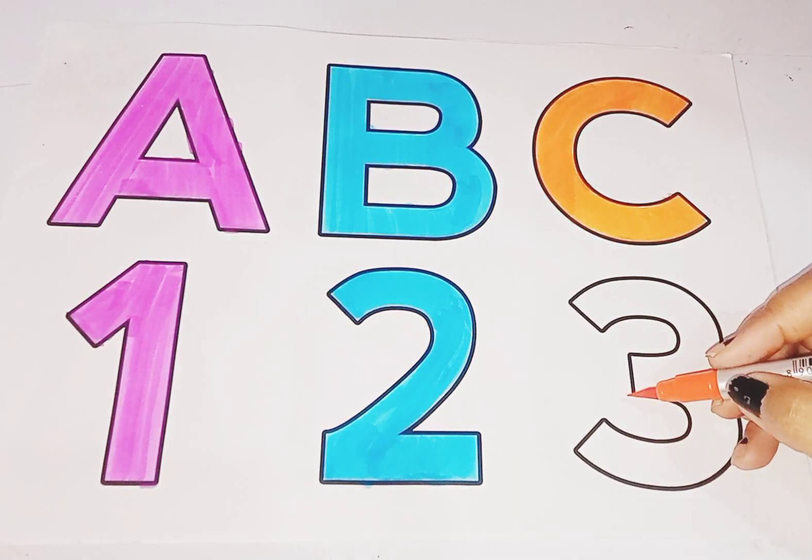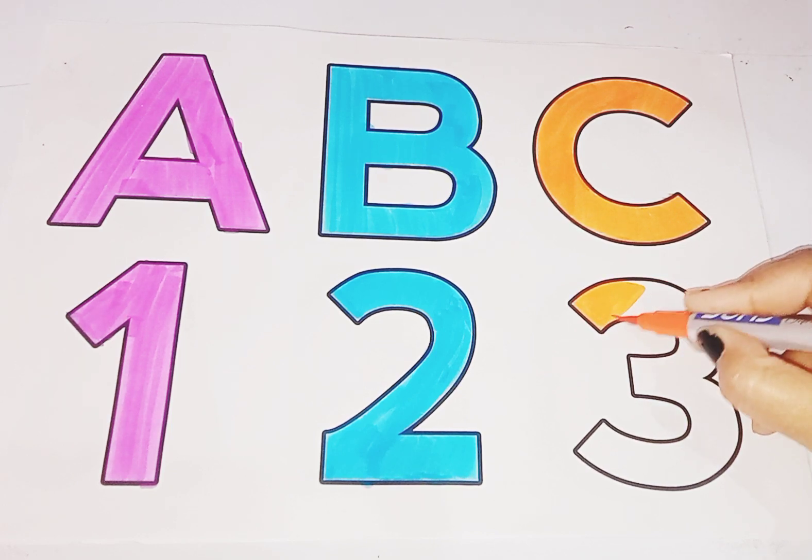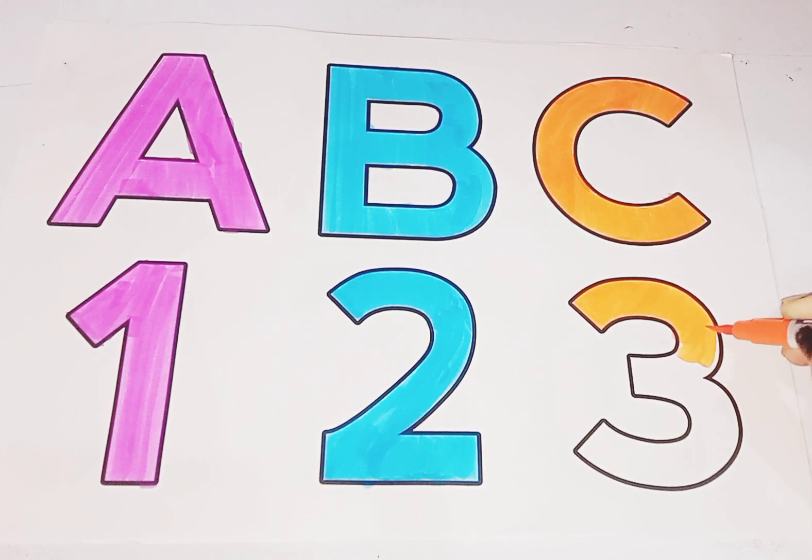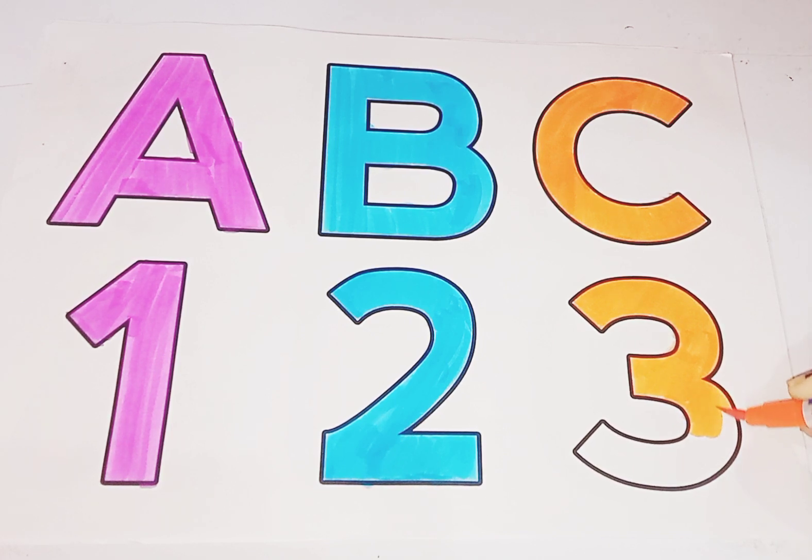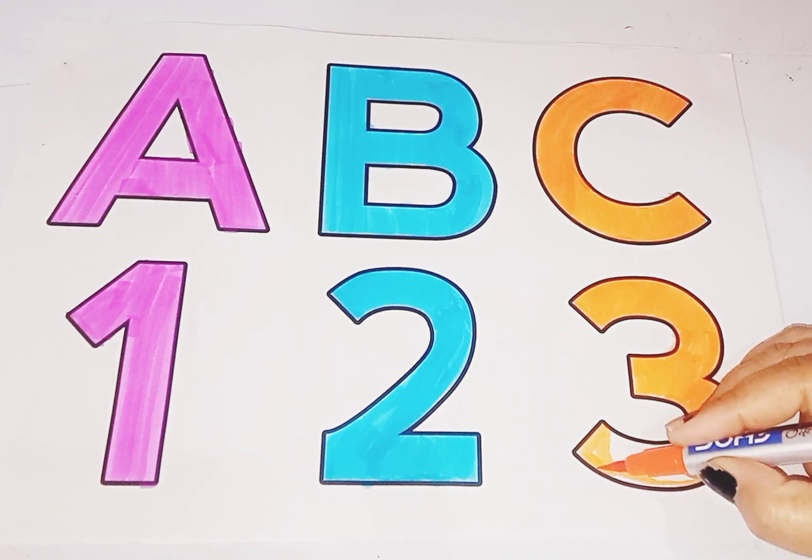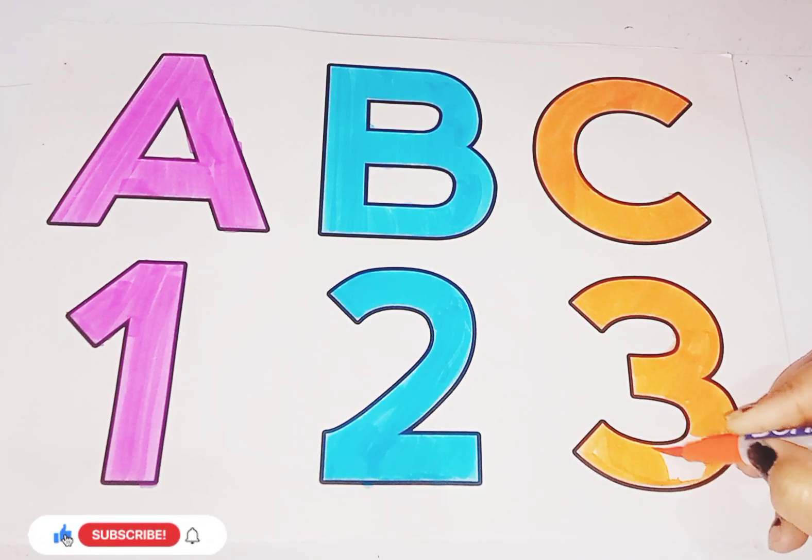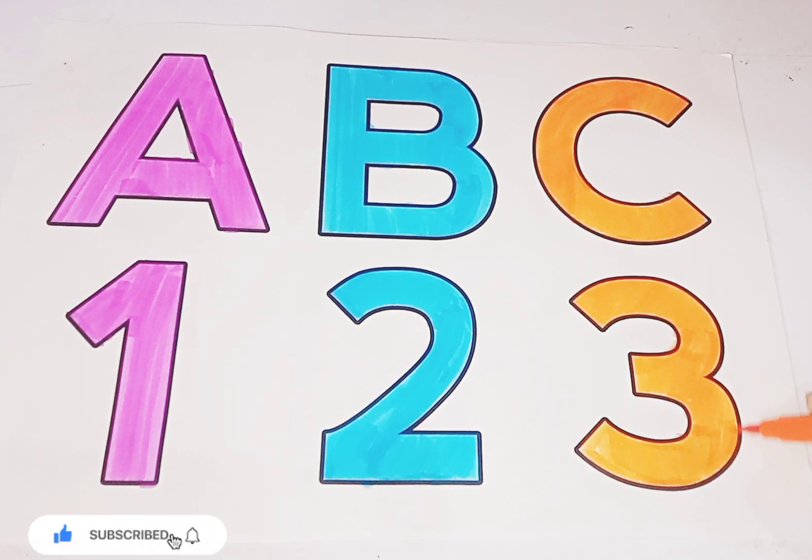C, a number is 3. T-H-R-E-E, 3. T-H-R-E-E, 3. This is number 3. T-H-R-E-E, 3.